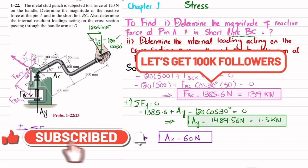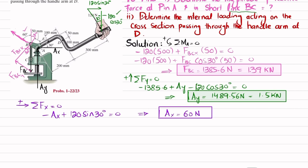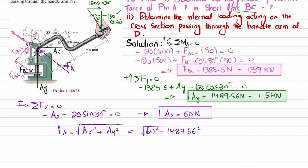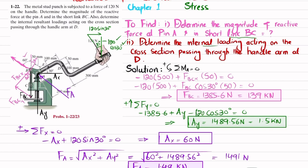That completes the first part — the reactive force at pin A and short link BC. The resultant reactive force at A is found using the Pythagorean theorem: FA = √(Ax² + Ay²) = √(60² + 1489.56²) = 1491 newtons, or approximately 1.49 kilonewtons.